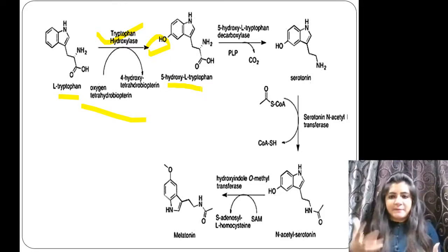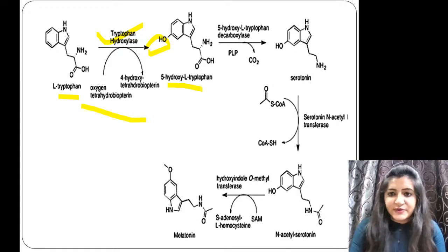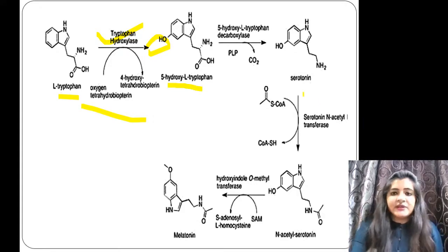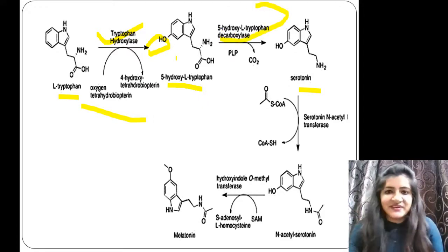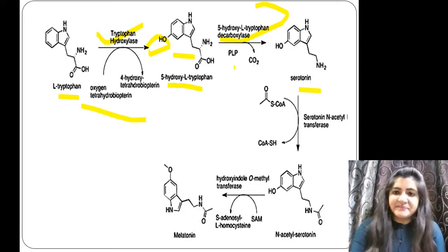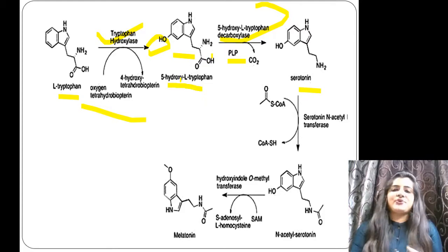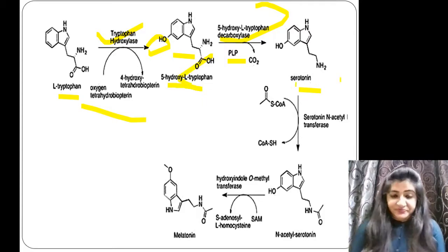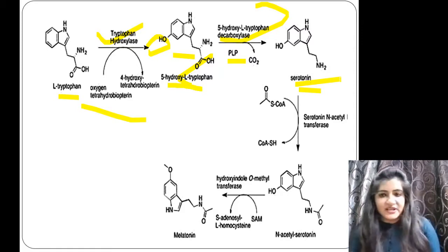From 5-hydroxy-L-tryptophan we get serotonin with the help of the enzyme 5-hydroxy-L-tryptophan decarboxylase. We simply remove the CO2 group from the ring, using PLP as a coenzyme. So by just removing the CO2 group, we get the structure of serotonin.